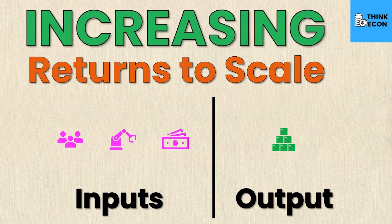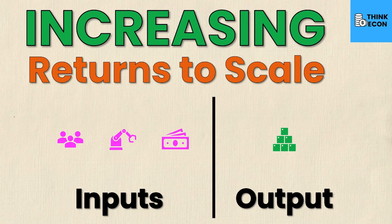Finally, let's look at increasing returns to scale. Increasing returns to scale occur when a proportional increase in all of the inputs results in a more than proportional increase in output. So in this case, if you were to increase the inputs by some variable multiple, then the output would be more than that multiple. This suggests that the production process is more efficient as it expands, and this leads to something called economies of scale.